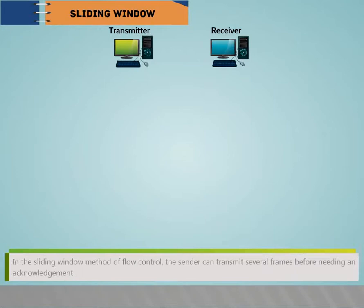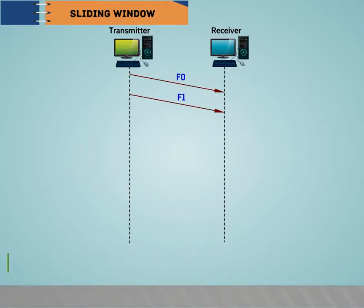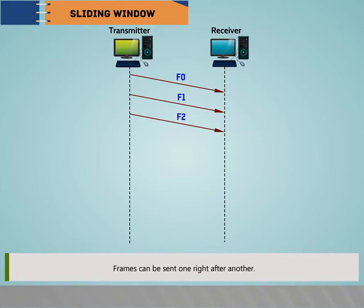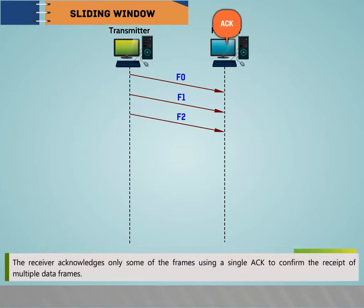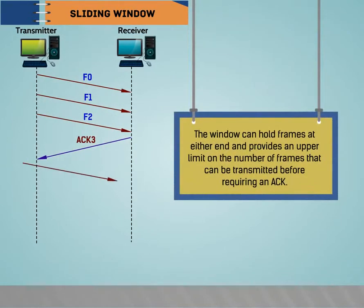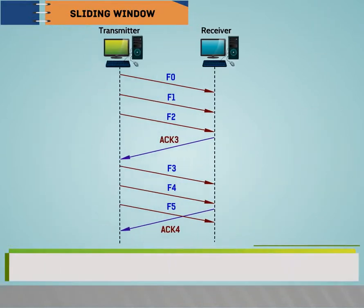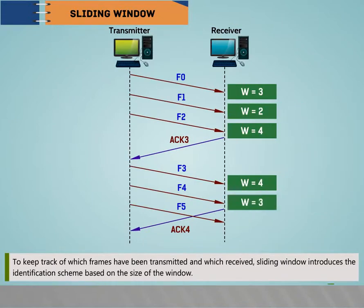In the Sliding Window method, the sender can transmit several frames before needing an acknowledgement. Frames can be sent one right after another. The receiver acknowledges only some frames, using a single acknowledgement to confirm receipt of multiple data frames. The window provides an upper limit on the number of frames that can be transmitted before requiring an acknowledgement. Frames may be acknowledged at any point without waiting for the window to fill up, and may be transmitted as long as the window is not yet full.